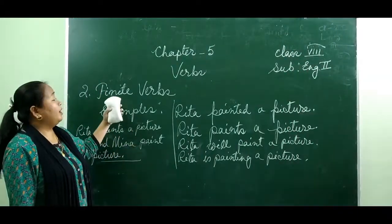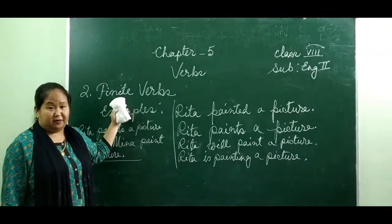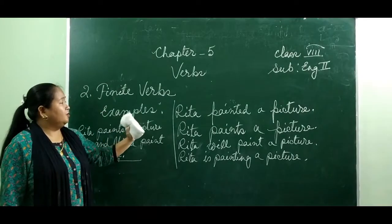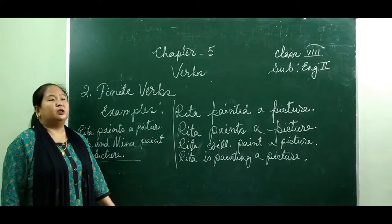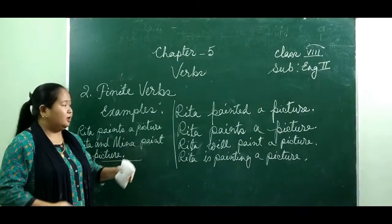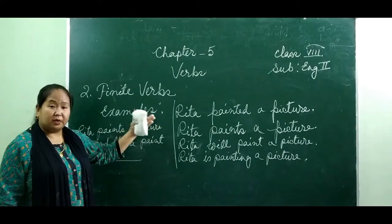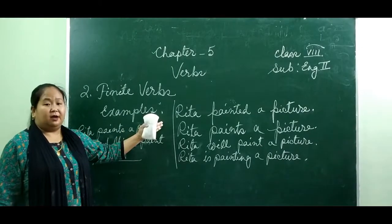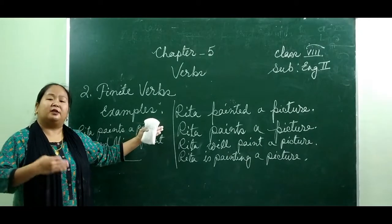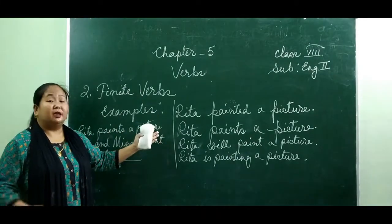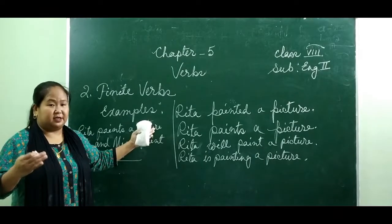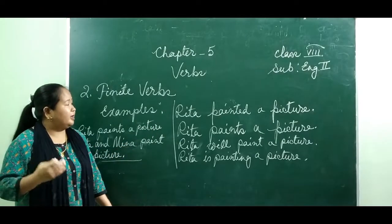Now finite verbs. What are finite verbs? Finite verbs are verbs that change according to the tense — meaning the time of action — according to the persons: first person, second person, or third person, and according to the number of persons during the action: singular or plural.